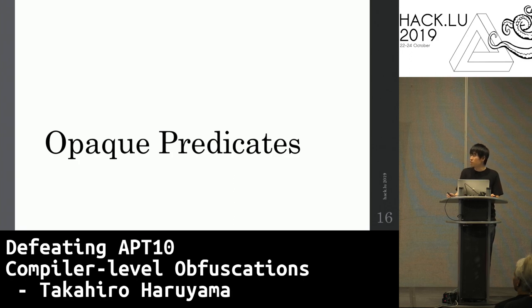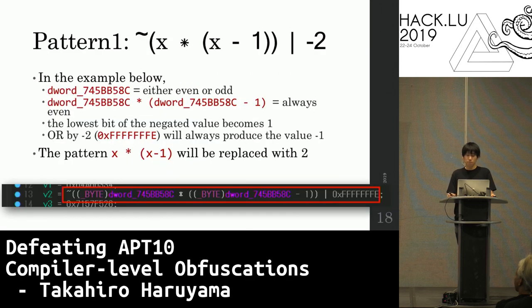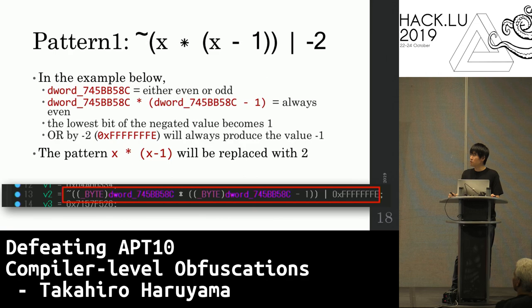Now I explain the modifications. First, opaque predicates. The original implementation replaces an opaque predicate pattern with another expression based on defined patterns. I added two more patterns and data flow tracking functions. The first pattern: the DWORD value is either even or odd, and the value multiplying the DWORD by DWORD minus one is always even, so the lowest bit of that value becomes one. Finally, OR by minus two will always produce the value minus one. So the pattern will be replaced with immediate value two, then eliminated after compiler optimizations.